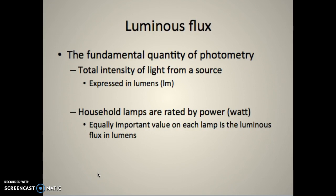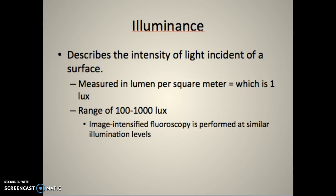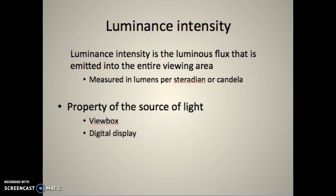Luminous flux is the fundamental quality we're looking at with light - the total intensity of light from a source expressed in lumens. Household lamps are rated by power or watt, and each lamp also has a luminous flux in lumens showing how much light it's putting off. Illuminance describes the intensity of light incident on a surface, measured in lumens per square meter, which is one lux. The range is between 100 and 1,000 lux, and image intensifiers perform at similar illumination levels.